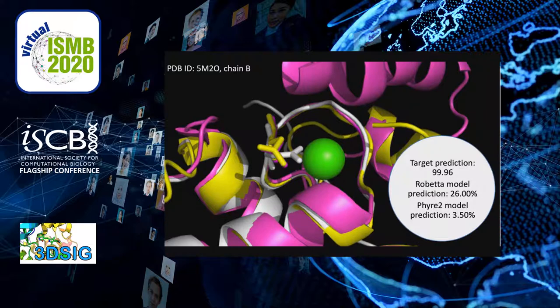Notice that the asparagine in the Fire2 and Robetta models adopt a different rotamer state relative to the reference structure. This change in conformation contributes to an alteration of the physicochemical properties assigned to the feature vectors used for functional site prediction, such that the Fire2 model receives a 3.5% site prediction probability, the Robetta model a 26% probability, and the target in which the asparagine interacts with the calcium ion receives a 99.96% functional site prediction probability. Thus, the difference score calculated for the Robetta model is 0.74 and the difference score for the Fire2 model is 0.965.